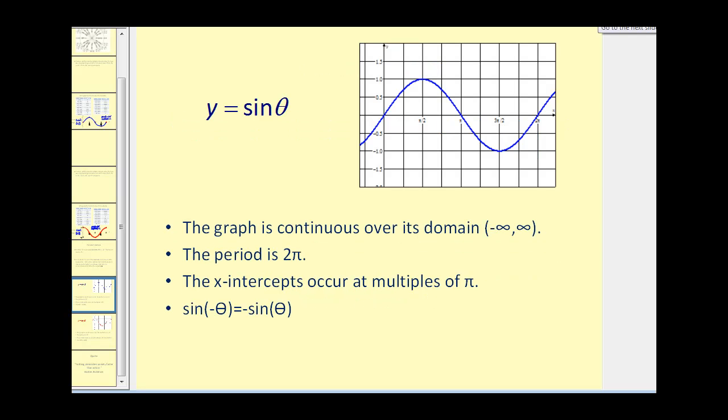And just to summarize, here's a graph of sine theta again. The graph is continuous over its entire domain. The period is two pi. The x-intercepts do occur at multiples of pi radians. And sine negative theta is equal to negative sine theta. And that's true because it is symmetrical about the origin, which we'll talk about more later.